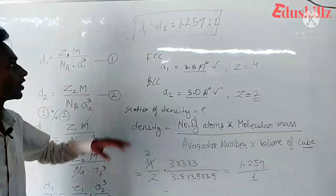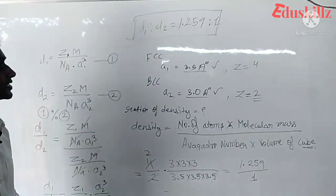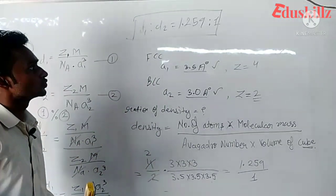D1 ratio D2 equals 1.259 ratio 1. This is our answer, the calculated ratio of the FCC and the BCC density: 1.259.